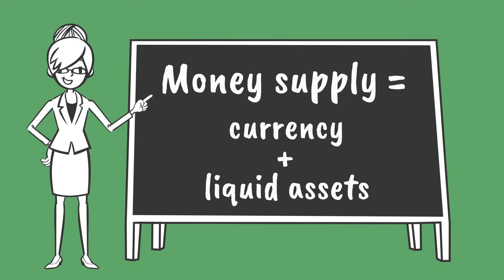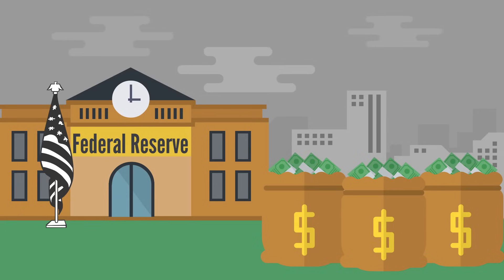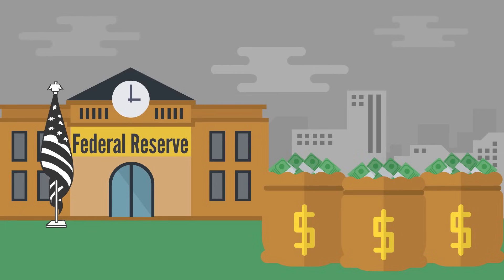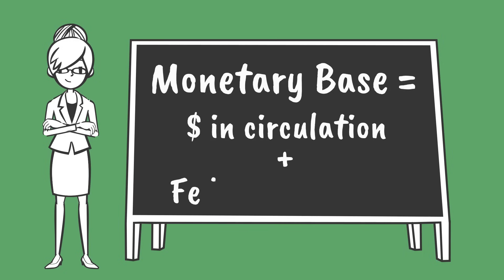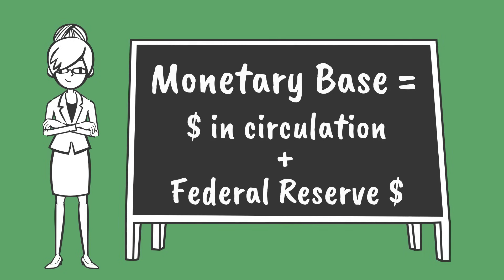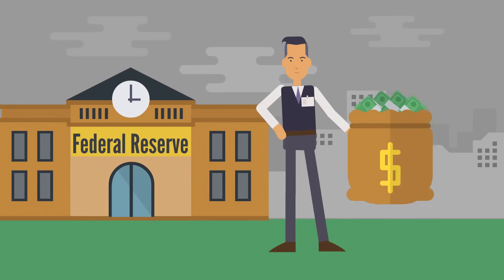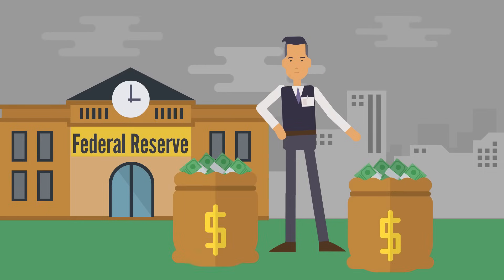This data is usually reported by the country's central bank, and the way it's measured can differ from country to country. In the US, for example, the most popular data points are: A, the monetary base, which tells us how much actual currency there is in circulation plus how much banks and other depository institutions keep as reserve balances in their accounts at the Federal Reserve.